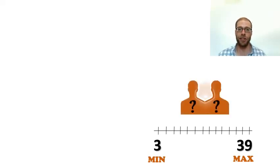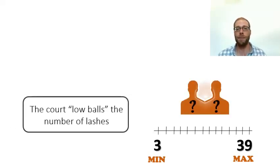We determine how many lashes each of these witnesses receives based on his relative fitness. Weaker people would receive the low end, three. More fit people would receive the higher end of 39.